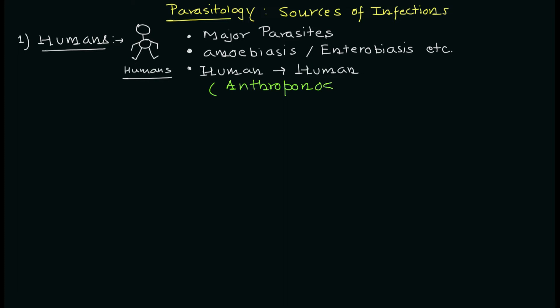So if a parasitic infection or disease is being transmitted from human to human, we can call it anthroponosis.